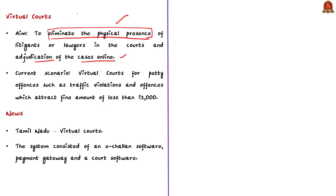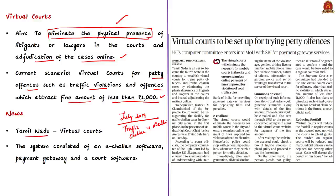The Supreme Court's e-committee has decided to use virtual courts for petty offenses such as traffic violations and offenses attracting fines of less than one thousand rupees. The first virtual court was inaugurated in July 2019 and deals digitally with on-spot traffic challans generated by the Delhi Traffic Police via an e-challan application developed by the National Informatics Centre. Tamil Nadu has also established virtual courts for trying petty offenses and traffic challan cases. This virtual court system uses an e-challan software, payment gateway, and a CODS software. The Madras High Court's computer committee entered into an MOU with State Bank of India for payment gateway services.